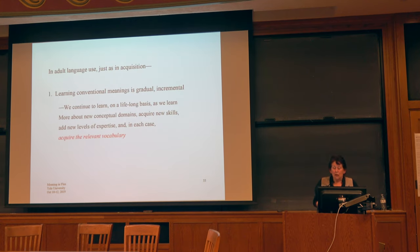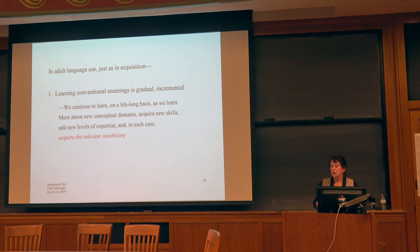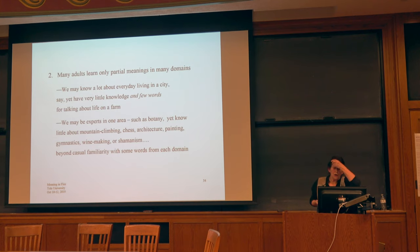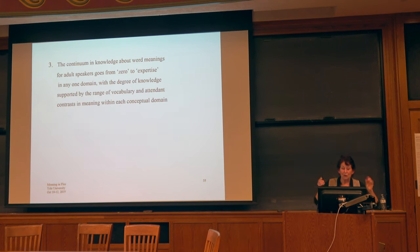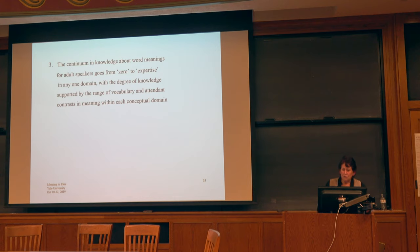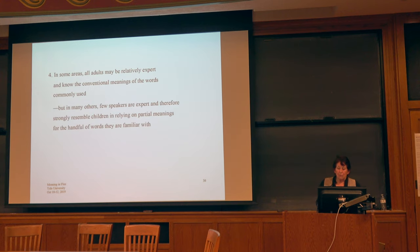In adult language, just as in acquisition, learning the conventional meaning is gradual and incremental. We actually continue to do this on a lifelong basis, and whenever we start acquiring knowledge about a new domain, we have to learn the relevant vocabulary for it. Many adults know only partial meanings in many domains. In some areas adults may be relatively expert; in others they strongly resemble children, relying on partial meanings for a handful of words that they happen to be familiar with.